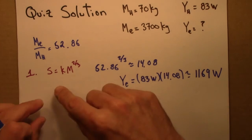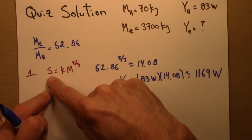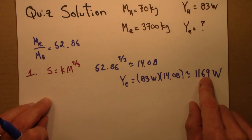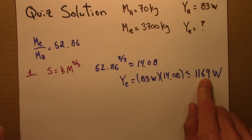So again, if metabolic rate scaled to a surface area, which it doesn't, but if it did, we would observe this expected metabolic rate for the elephant.